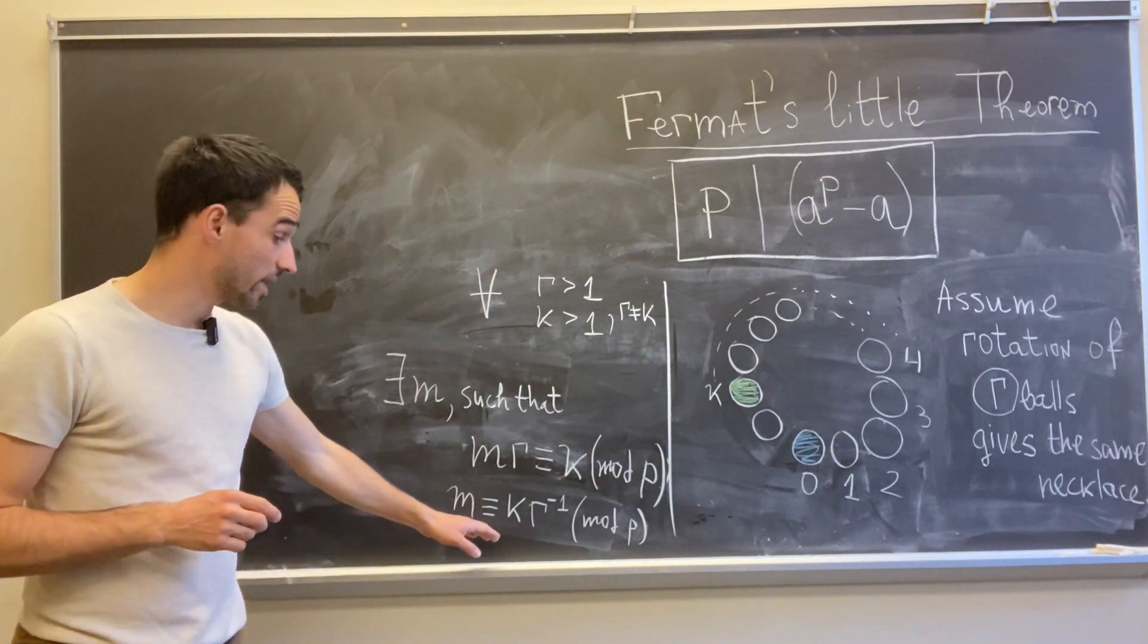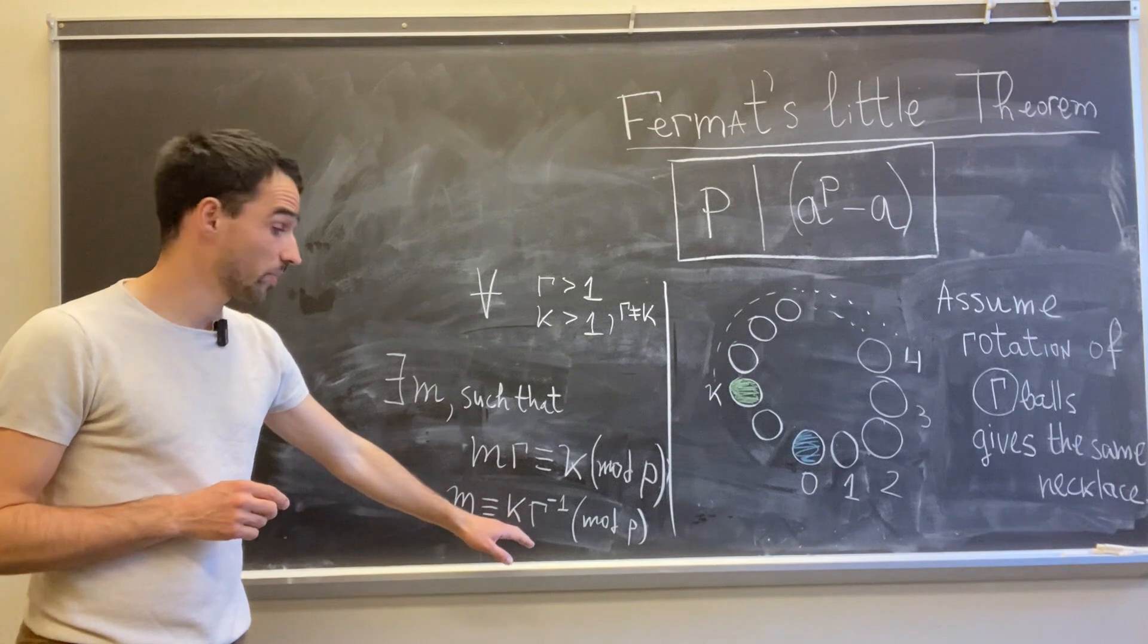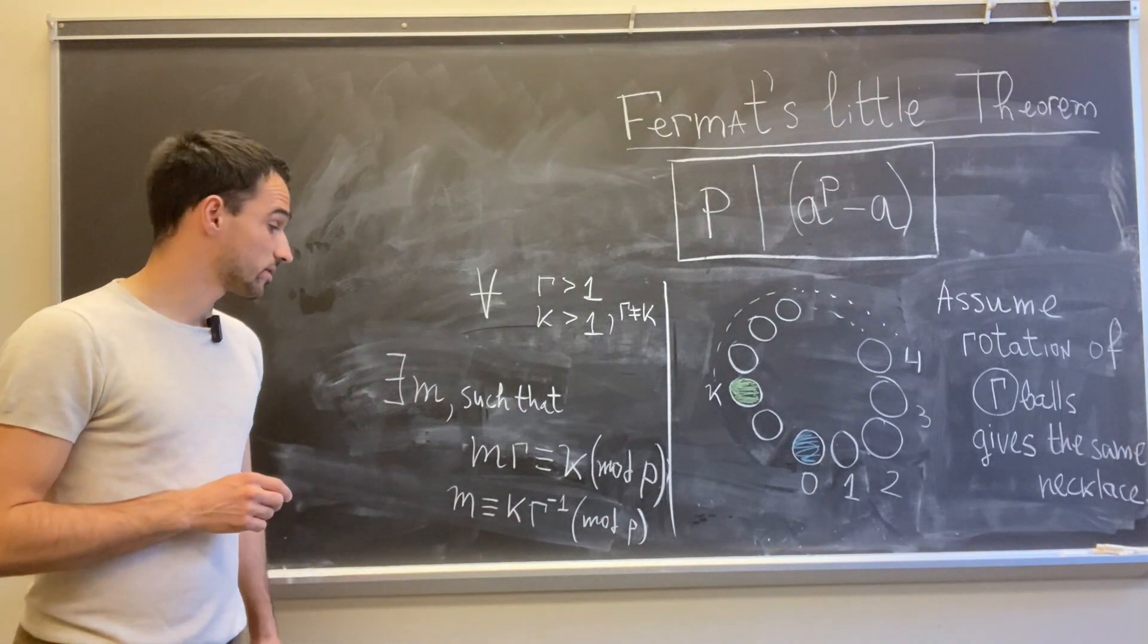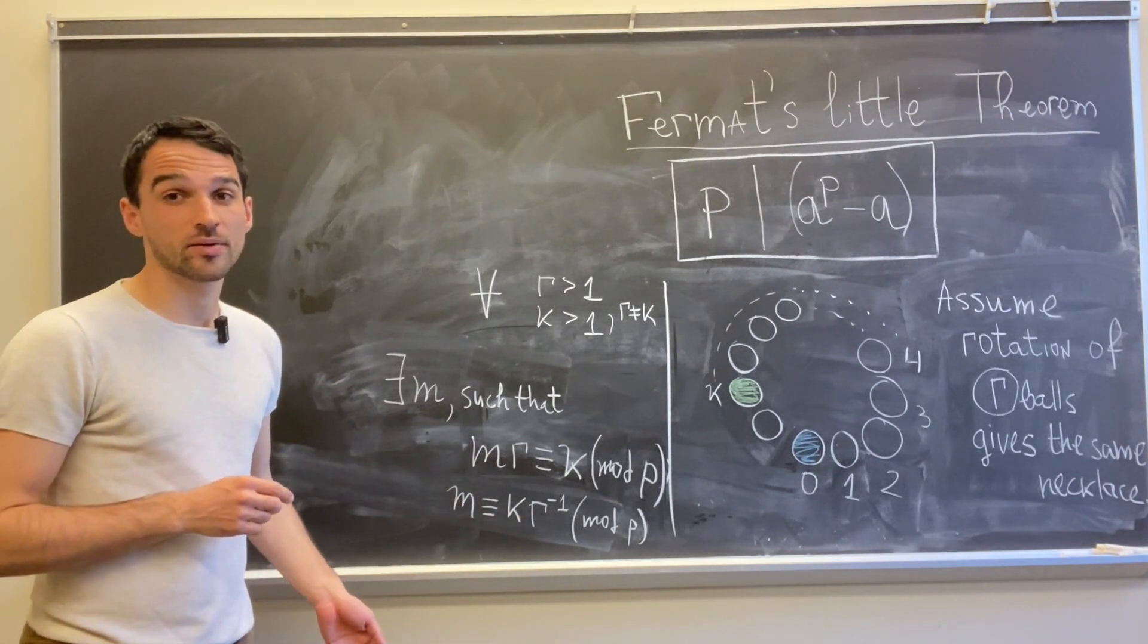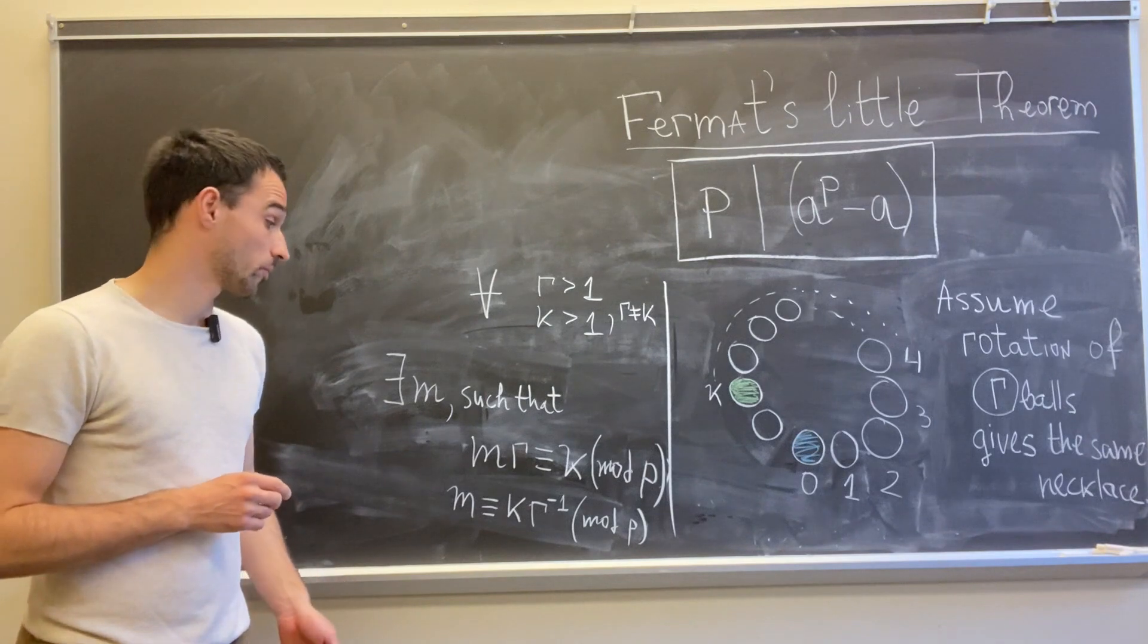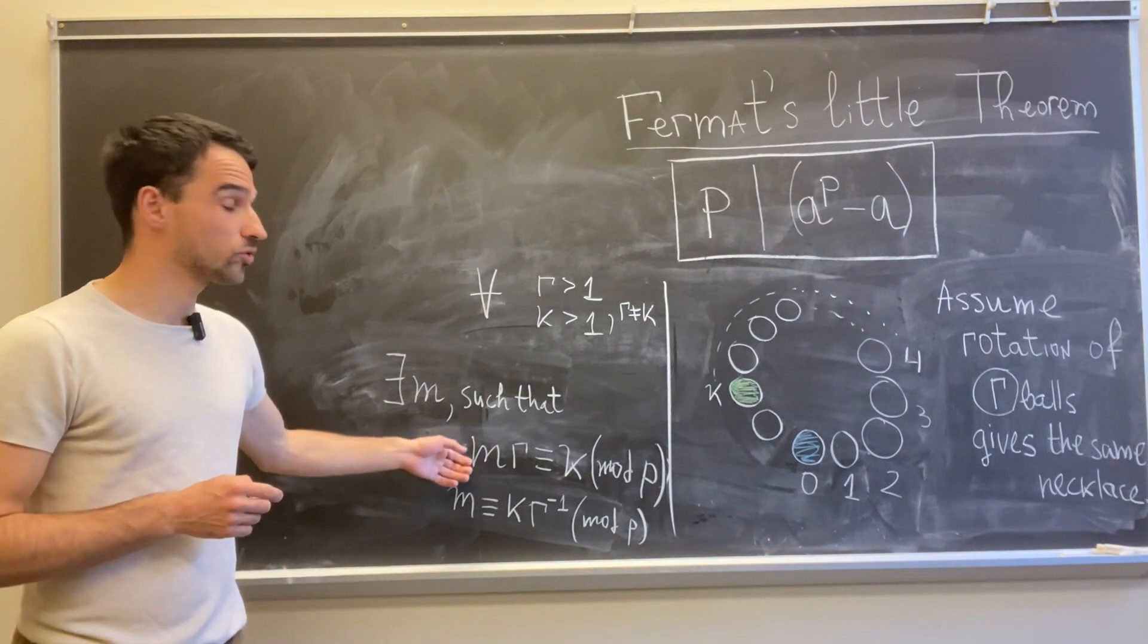So m is just k times the inverse of r mod p. And we always have an inverse for r when p is a prime. So this is why we always have a solution.